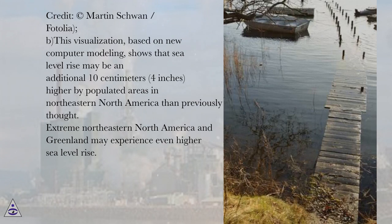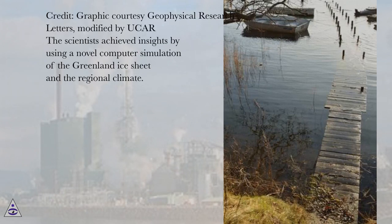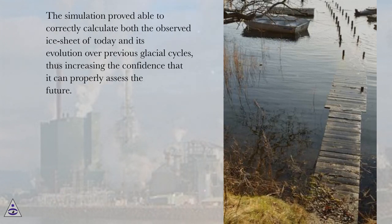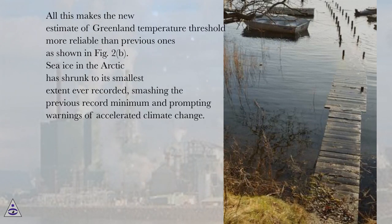This visualization, based on new computer modeling, shows that sea level rise may be an additional 10 centimeters (4 inches) higher in populated areas in northeastern North America than previously thought. Extreme northeastern North America and Greenland may experience even higher sea level rise. The scientists achieved insights by using a novel computer simulation of the Greenland ice sheet and the regional climate. This model performs calculations of these physical systems including the most important processes, for instance climate feedbacks associated with changes in snowfall and melt under global warming. The simulation proved able to correctly calculate both the observed ice sheet of today and its evolution over previous glacial cycles, thus increasing the confidence that it can properly assess the future. All this makes the new estimate of Greenland temperature threshold more reliable than previous ones.